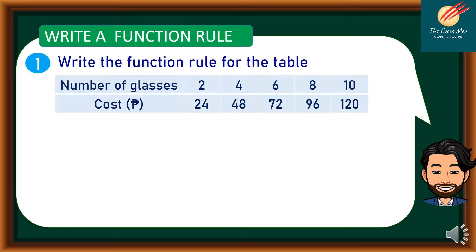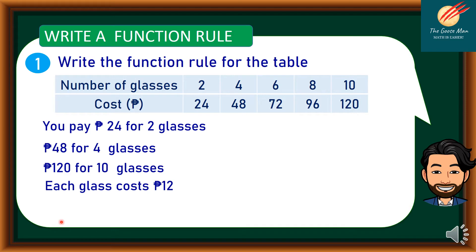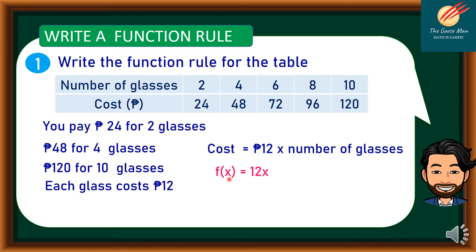We can write a function rule. For example, write the function rule for the table. We can see that the number of glasses corresponds to the cost — 24 pesos for 2 glasses, 48 pesos for 4 glasses, 120 pesos for 10 glasses. Each glass costs 12 pesos, so the cost is equal to 12 times the number of glasses. Therefore, the function is f of x is equal to 12 times x.